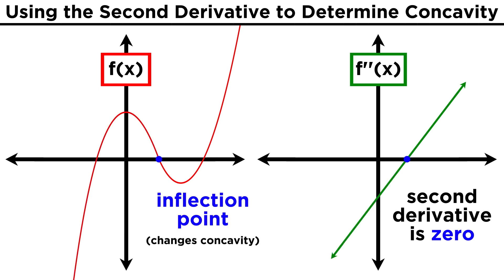Anytime the second derivative is equal to zero, this will correspond to an inflection point — a point where a function changes from concave up to concave down, or vice versa. This is because if the second derivative crosses the x-axis, then the first derivative must be changing from increasing to decreasing or from decreasing to increasing, and therefore the original function must be changing its concavity.